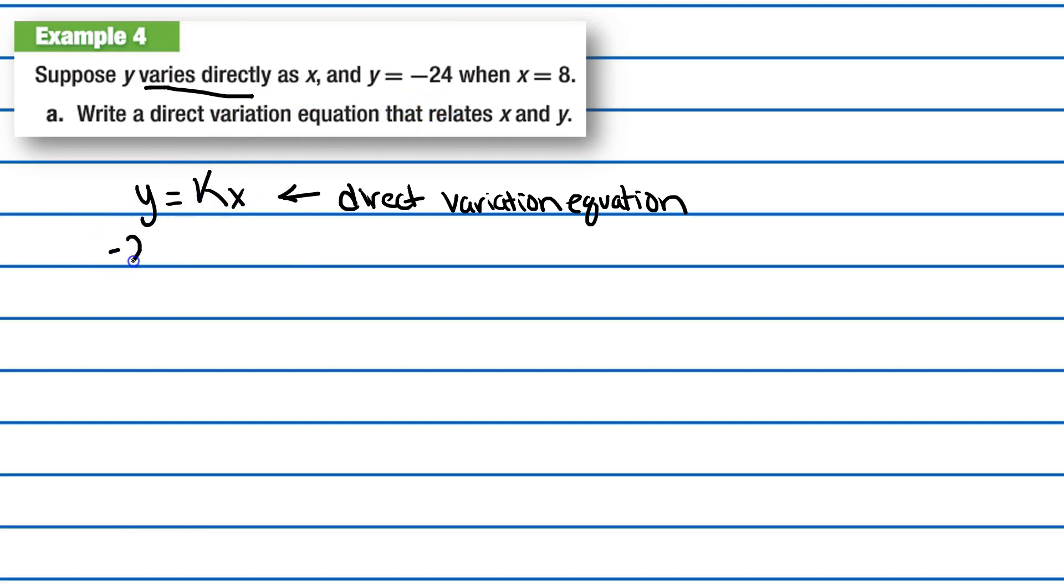It says y equals negative 24, so you're going to plug in y for negative 24 equals k. We don't know what k is, that's what we're trying to find out. And we know x equals 8, so 8 gets plugged in as 8. Now we want to solve for k - we need to get k by itself, so that means we need to divide by 8 on both sides. k equals negative 3.